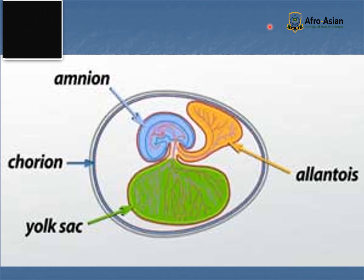The allantois is a sac-like extra-embryonic membrane that removes waste from the embryo. The allantois exchanges oxygen and carbon dioxide with the air outside the eggshell and serves as a disposal site for uric acid.